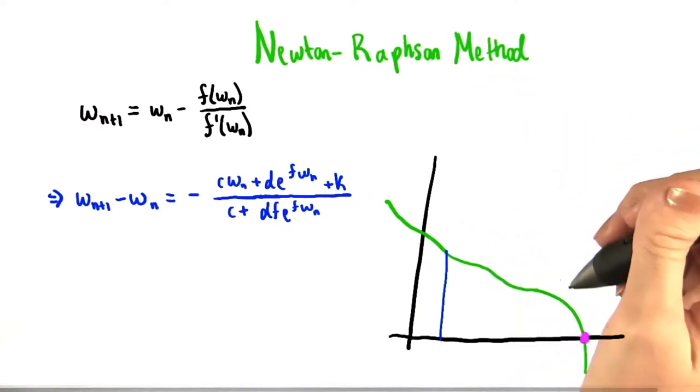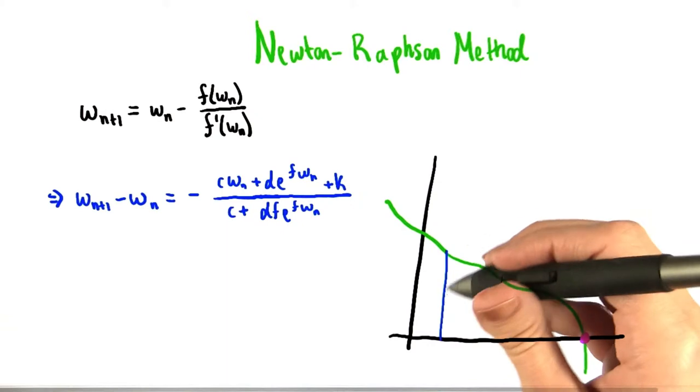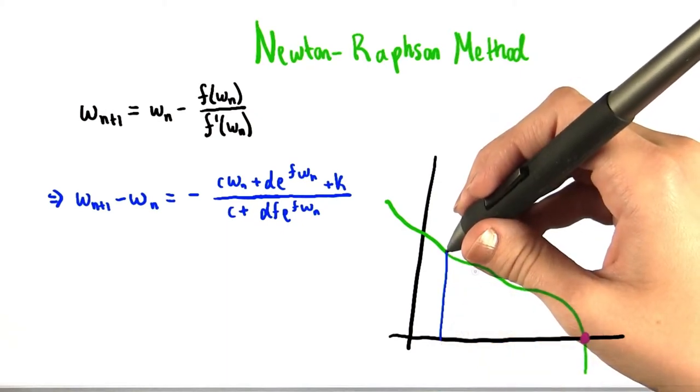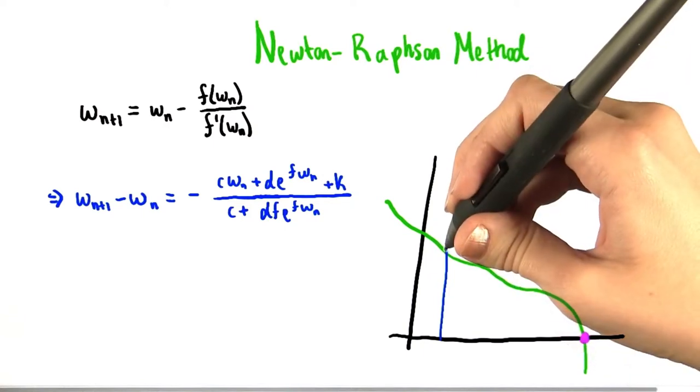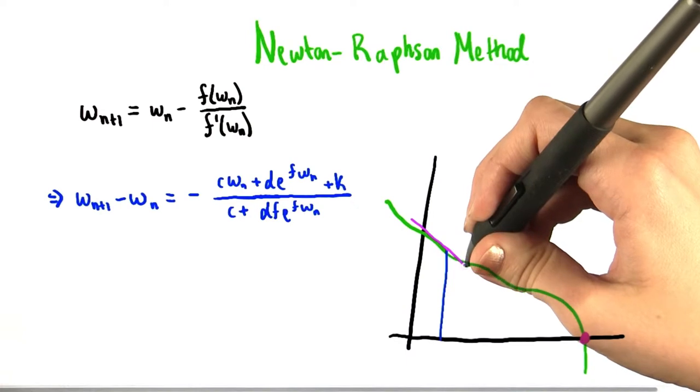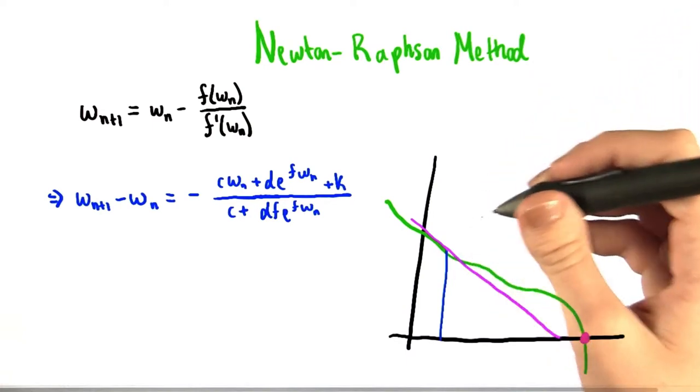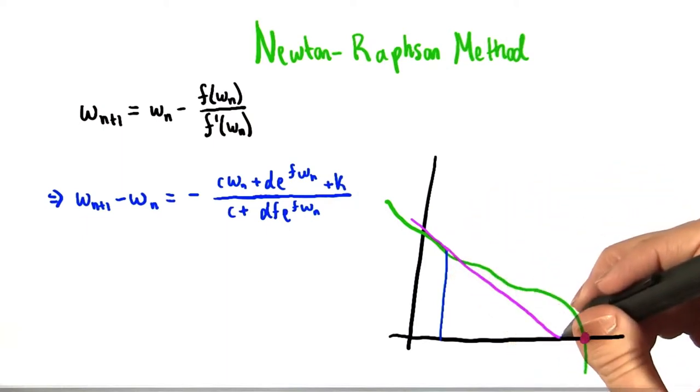To use the Newton-Raphson method, I start by making a guess at what the x value that pairs with that y value is. So maybe I guess the x coordinate that corresponds to this blue line right here. What the Newton-Raphson method does is it takes the slope of the line tangent to the green curve at this point. So maybe that tangent line looks a little something like this. And extends that line down to the y value that we're interested in.